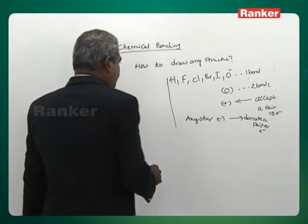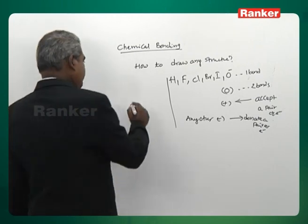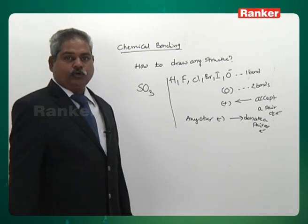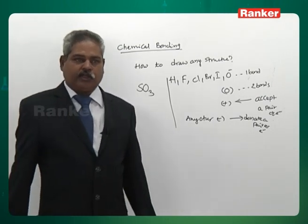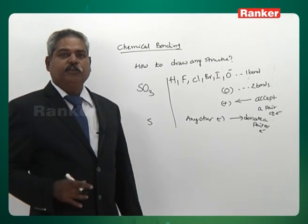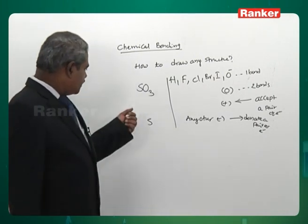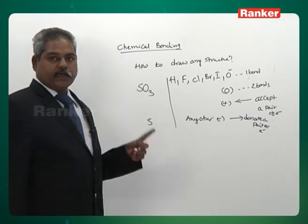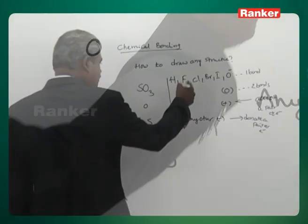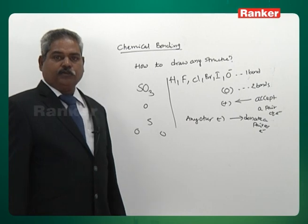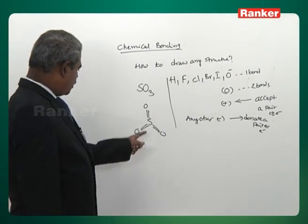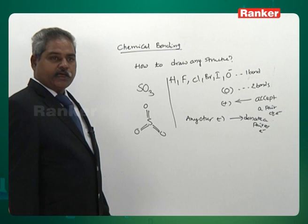Now let us apply this in the simplest possible way. SO3: how to draw its structure? Sulfur is the central atom — there is only one sulfur. Three oxygens form two bonds each. We get three sigma and three pi bonds in SO3.